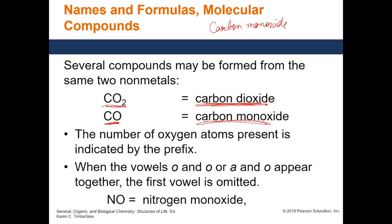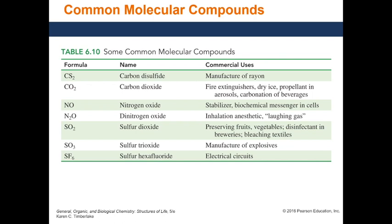This table gives examples of various molecular compounds for practice. Look at the formula and come up with the name on your own, then do the reverse — look at the name and write the chemical formula. For example, what is the chemical formula for 'carbon disulfide'? You can tell this is a molecular compound because we only use these prefixes for molecular compounds, and carbon and sulfide are both non-metals.